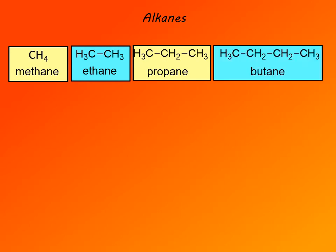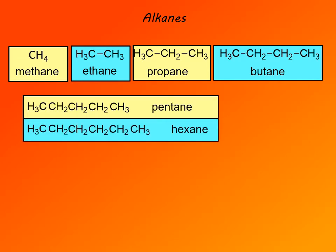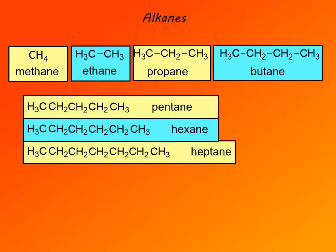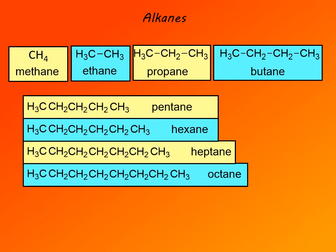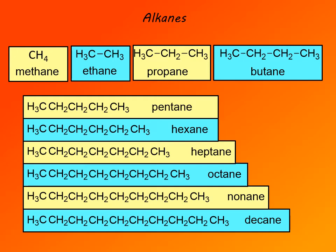The rest of the alkanes are named based on the number of carbon atoms, so the corresponding Greek or Latin number is used to indicate the number of carbon atoms in the molecule. Five carbons: pentane. Six carbons: hexane. Seven carbons: heptane. Eight: octane. Nine: nonane. Ten: decane. Typically in an introductory organic chemistry course, a student needs to know only these ten.